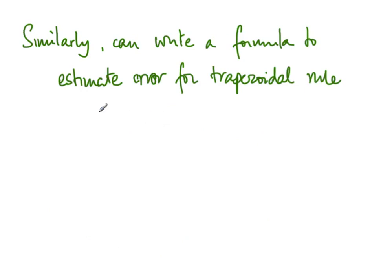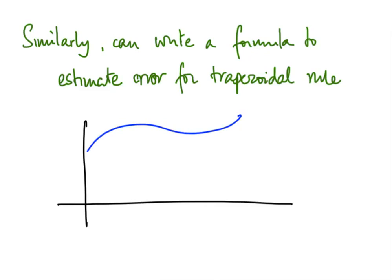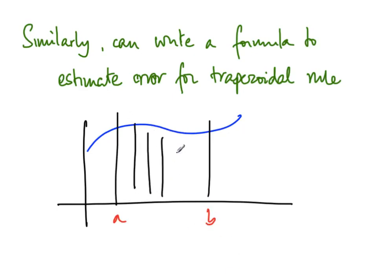Similarly, we can write a formula that estimates the error for the trapezoidal rule. The trapezoidal rule divides the curve into suitably thin trapezoids, and the question is how thin they should be. You get an error estimate in terms of the number of trapezoids, and using a similar argument, if you want to estimate the integral within a given accuracy, the formula tells you how many trapezoids you should place between a and b.